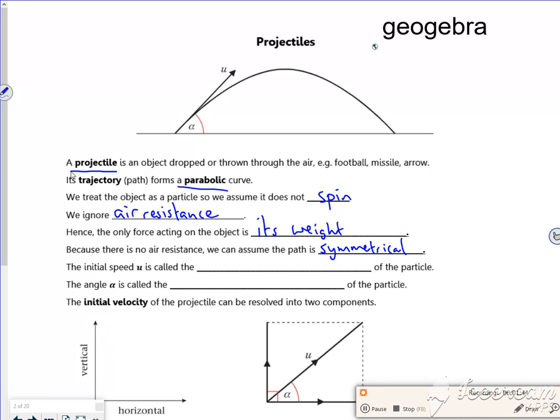So the initial speed is called the speed of projection. I've never heard it called the speed of projection, but never mind. And the angle alpha is the angle of projection.